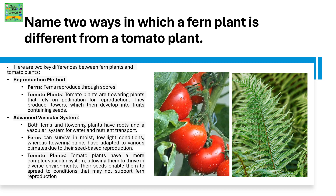Tomato plants have a more complex vascular system, allowing them to thrive in diverse environments. Their seeds enable them to spread to conditions that may not support fern reproduction.